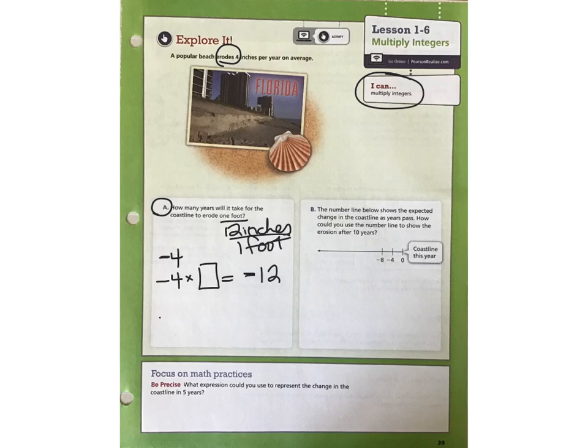After one year, the coastline would erode 4 feet. After two years, it would erode another 4 feet, which is a total of negative 8 feet. And then if I add one more year of erosion, I will get a negative 12.